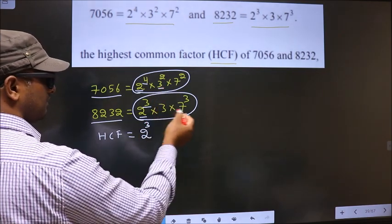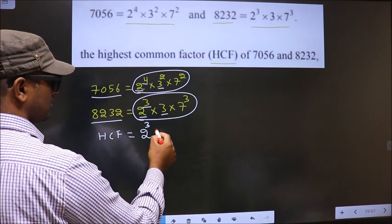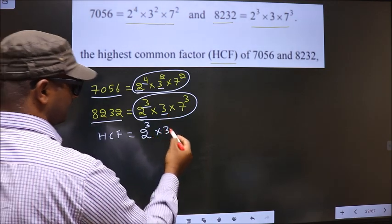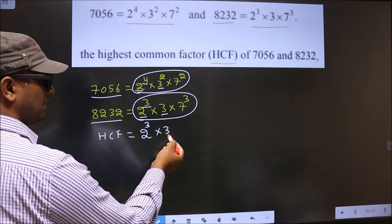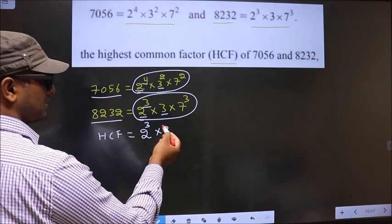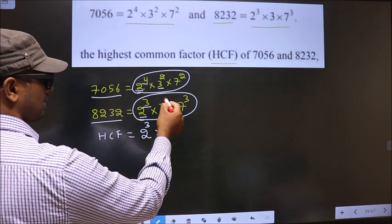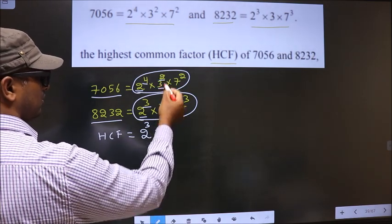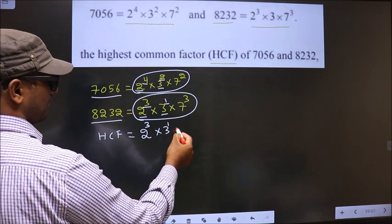Next number is 3. Do we have 3 here? Yes. So here also you write 3. What power will this take? It will take the smaller of both powers. Smaller of 1 and 2 is 1, so here it will take 1.